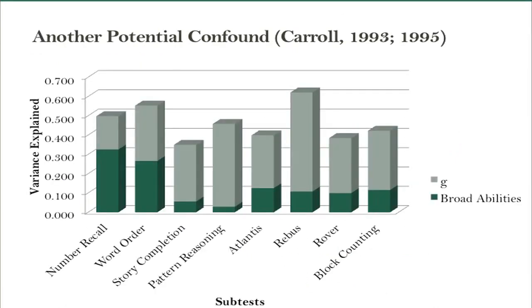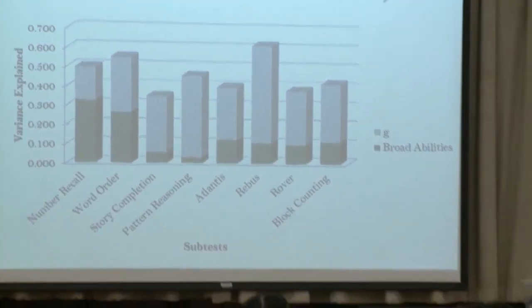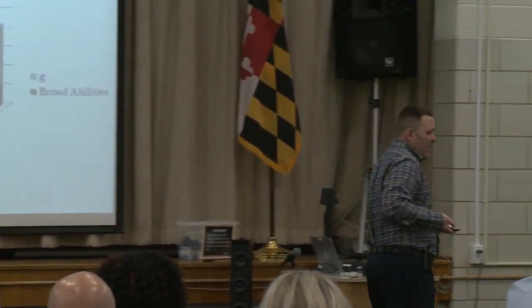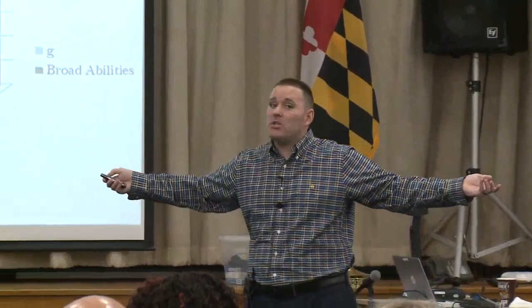Another factor is that even when we can locate these dimensions, we're not measuring them very well. Carol talked a lot about how if you're going to interpret the broad ability level, you have to account for the G variance in there, because we're not doing it at the level of the individual. All cognitive measures contain different mixtures of G, the stuff we like, and error. When we interpret a cognitive score — like Johnny gets a visual processing score of 85 — we don't tell the parent that part of this 85 is general intelligence, part is actual visual processing, and part is error. We can approximate the error by looking at the confidence interval, but we don't look at the G variance.